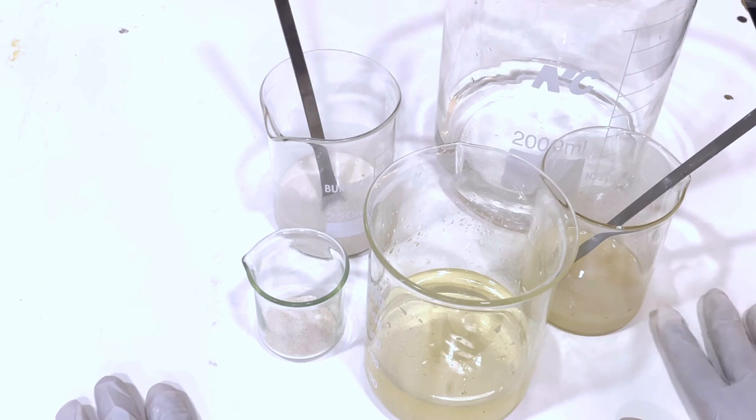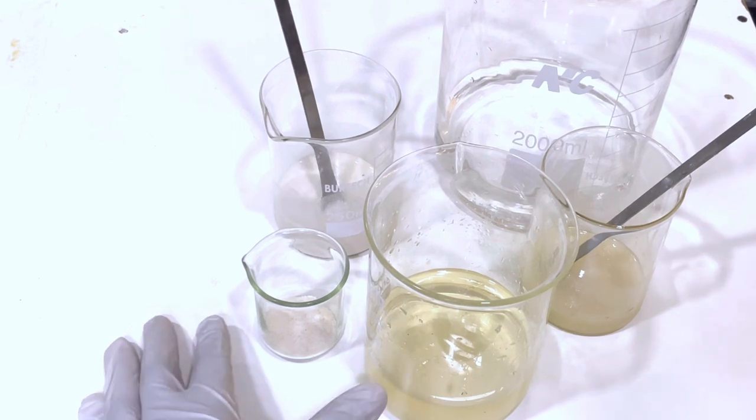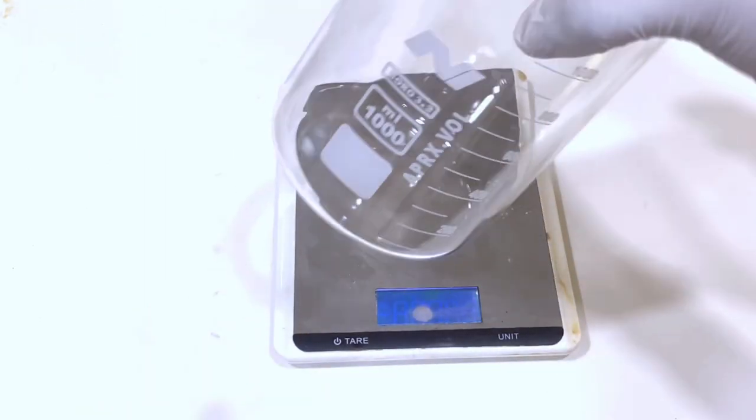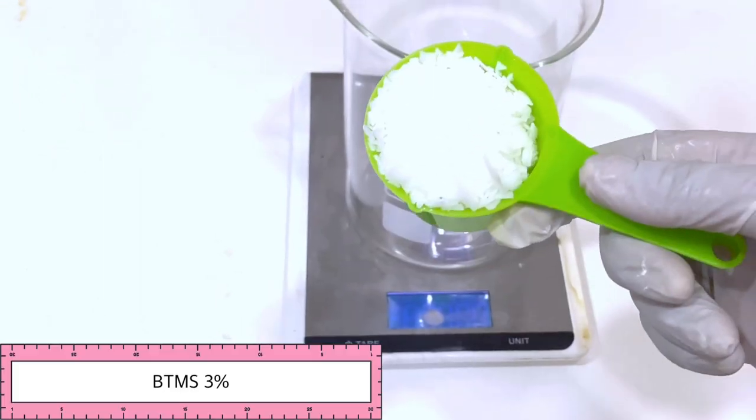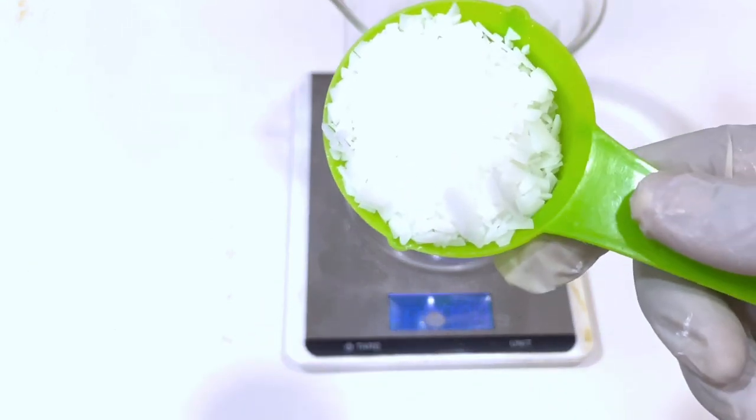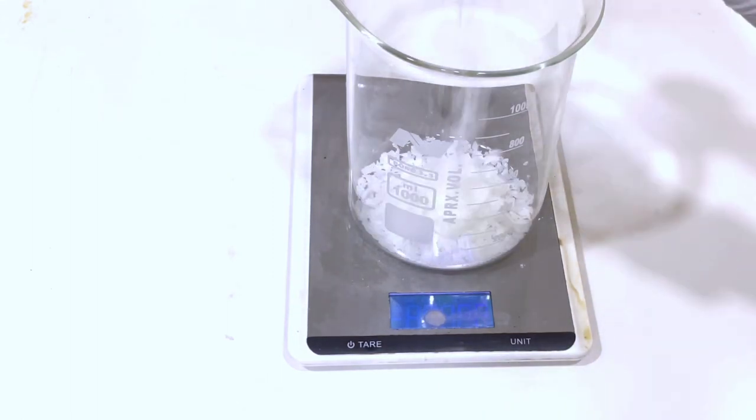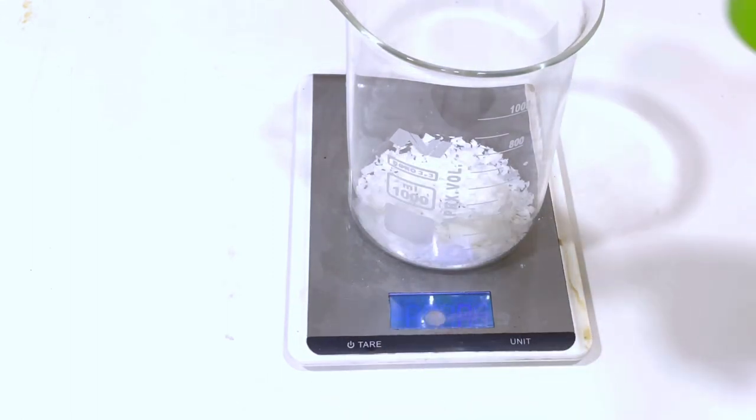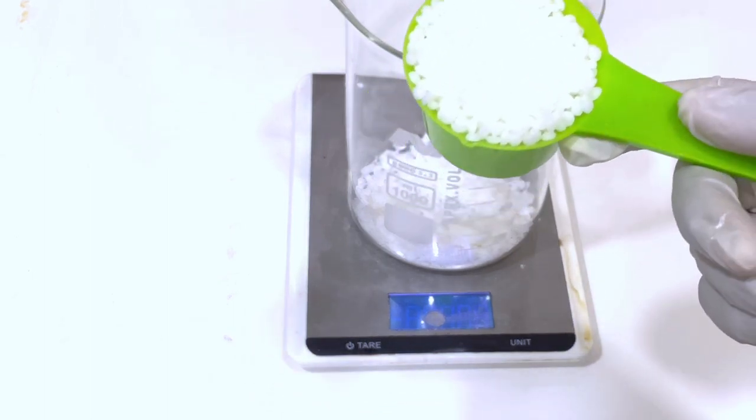Now we are done with our water phase. We are going to put all of this aside and work on our oil phase. We take another beaker and measure out our oil phase. The first ingredient on our list is BTMS 50. BTMS is a very wonderful ingredient that I love to include in my skincare and hair care products. It has a very sophisticated silky powdery skin feel to your creams or lotions due to its conditioning agent. It's basically a conditioning ingredient.